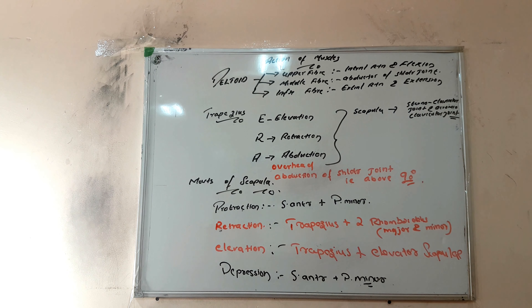Elevation is by trapezius as well as one more muscle - levator scapulae. To summarize: protraction is by serratus anterior and pectoralis minor; depression of scapula is also by serratus anterior and pectoralis minor; retraction is by trapezius and rhomboids major and minor; elevation is by trapezius and levator scapulae. These are the actions of deltoid and trapezius and their help in movement of the scapula.